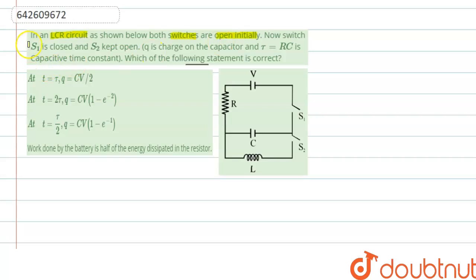Now switch S1 is closed and S2 kept open. Q is charge on the capacitor and tau equal to RC is capacitive time constant. Which of the following statement is correct?